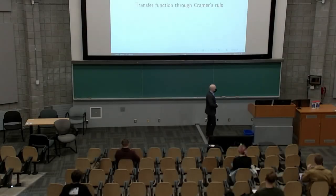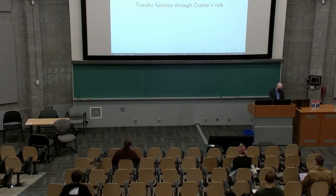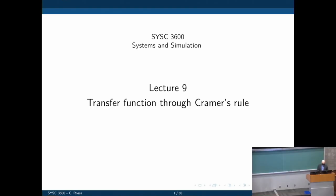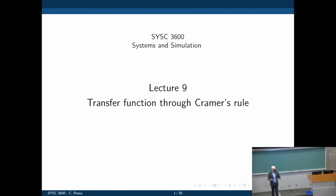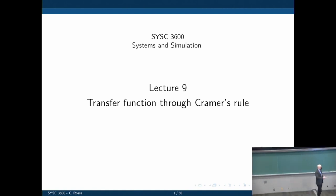Today we're going to talk about transfer functions through Cramer's rule. This is simply a way to solve a system of differential equations. As you probably noticed in the last lecture, when dealing with transfer functions for complex systems, we deal with a set of differential equations in the frequency domain and then somehow combine them to create an explicit relation between one input and one variable of interest that describes certain characteristics of that system.